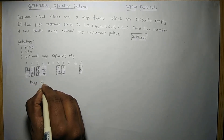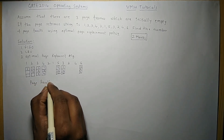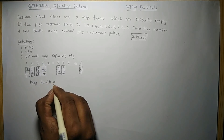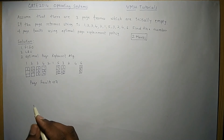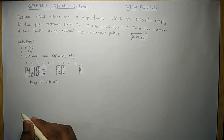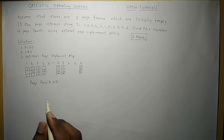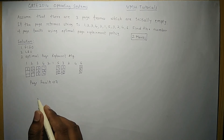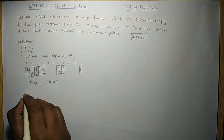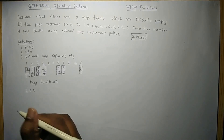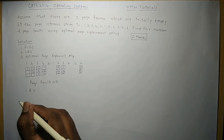The number of page faults using the optimal algorithm is seven. Applying LRU may give a different number of page faults. Let's now solve the same problem using LRU — Least Recently Used — where the page not used most recently is replaced.